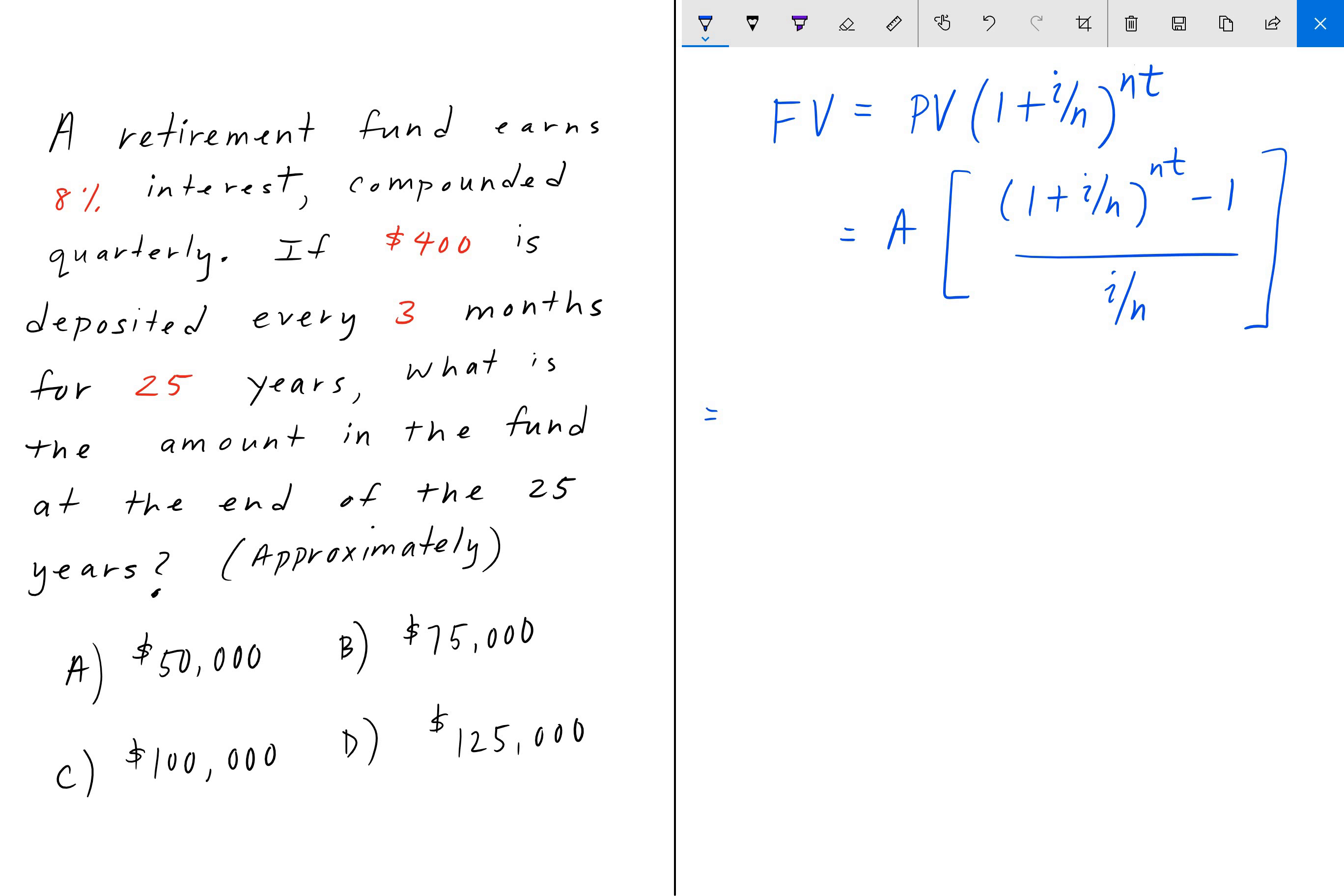The payment amount is $400, and it is deposited quarterly, so every three months. 1 plus the interest rate is 8%, 0.08, divided by the number of compounds per year. The number of compounds per year is every three months, so 12 divided by 3 is 4. All of that raised to the power nt, so that's 4 times 25, minus 1. And we divide all of that by the interest rate divided by 4, which is the number of compounds.